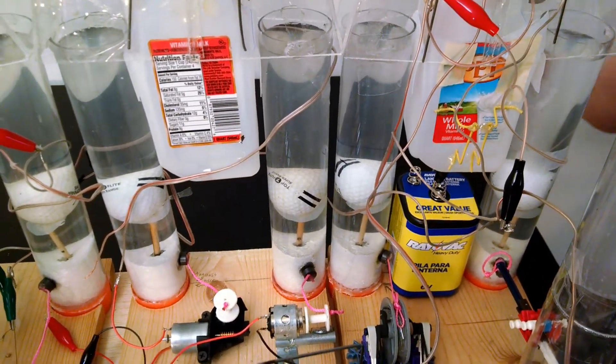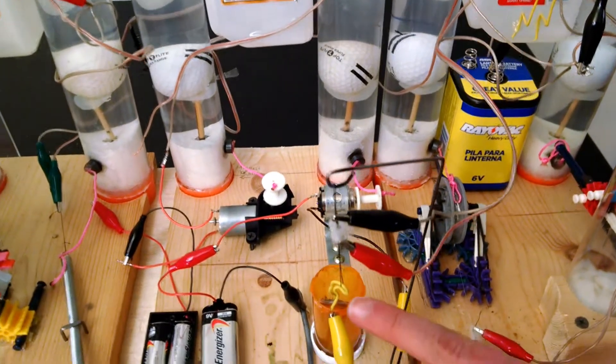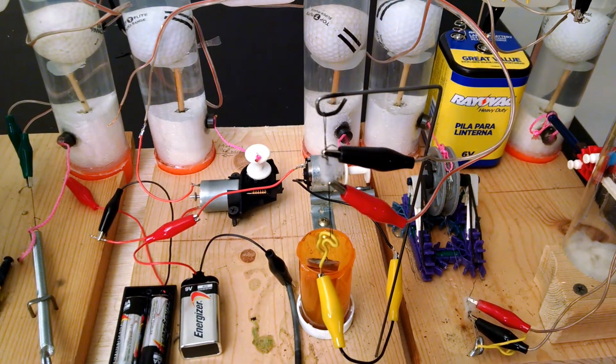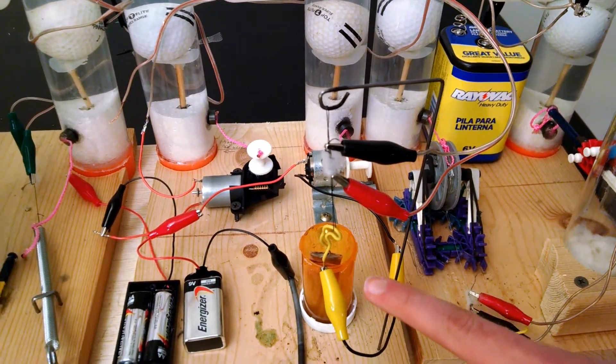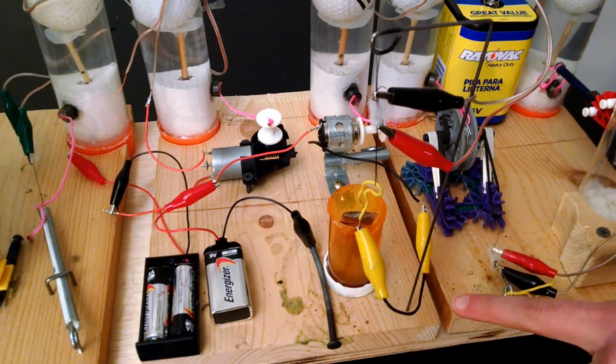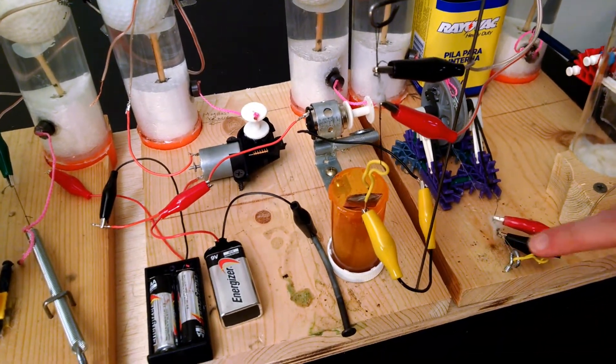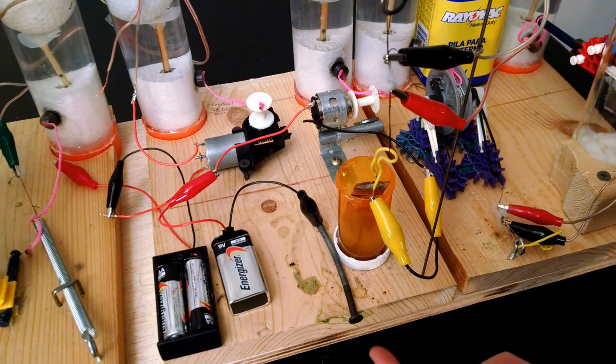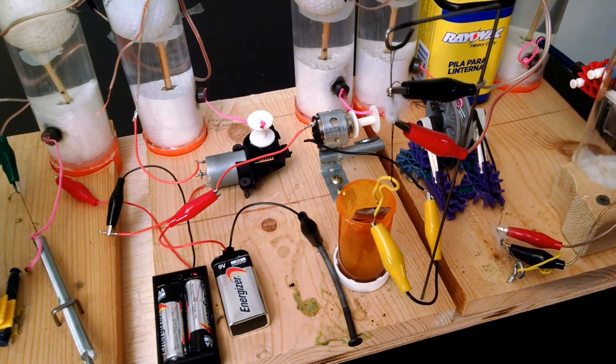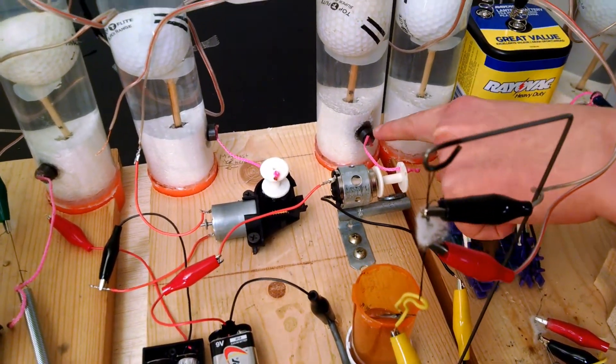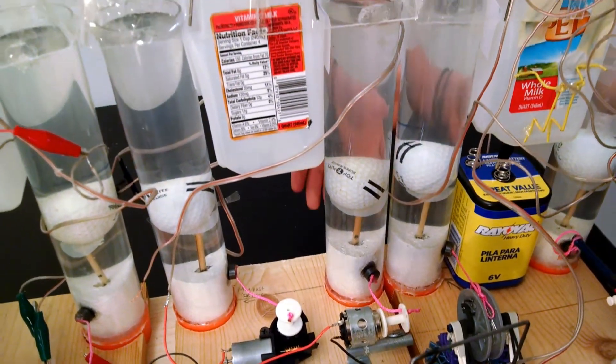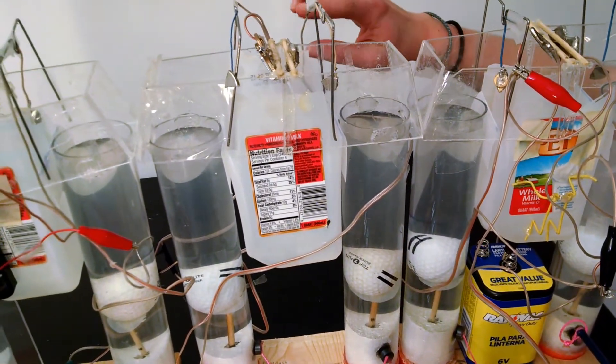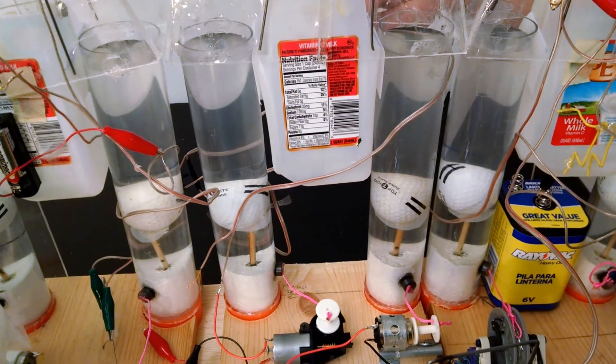which will set off another steel wool fuse burning through a string dropping the copper electrode into a chemical battery which the zinc electrode will already be in turning on this motor which will pull off this magnet letting the float rise with the golf ball triggering another magnetic switch as it falls down into the scoring jug.